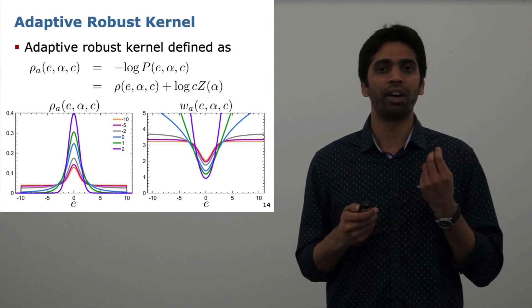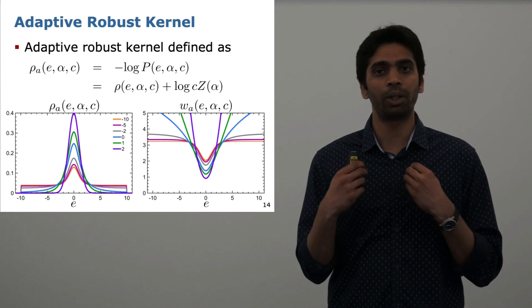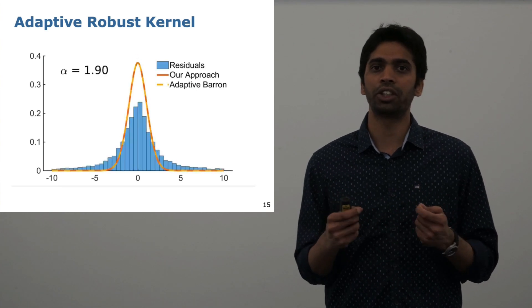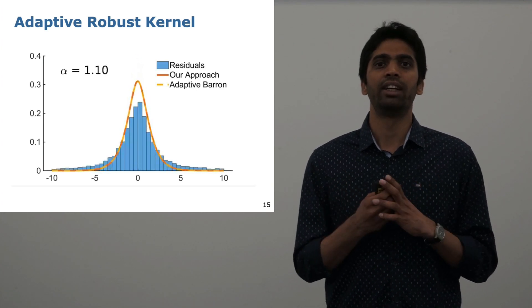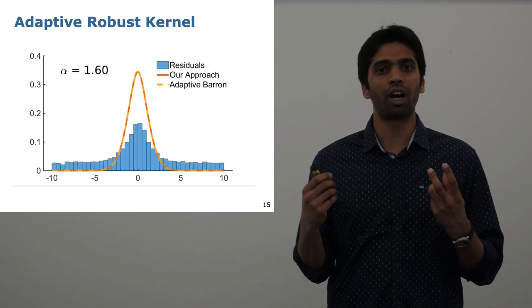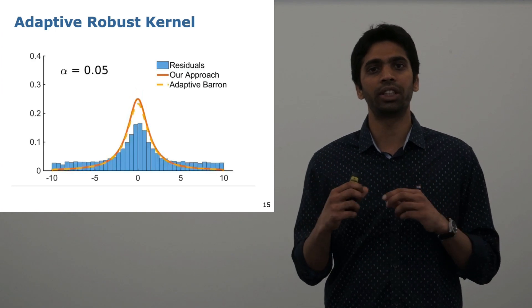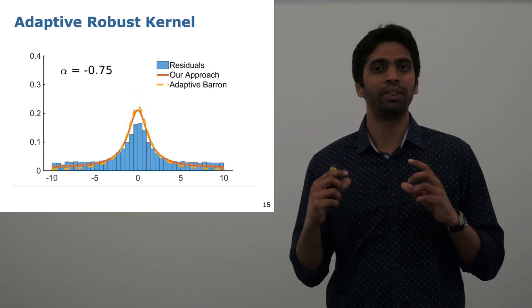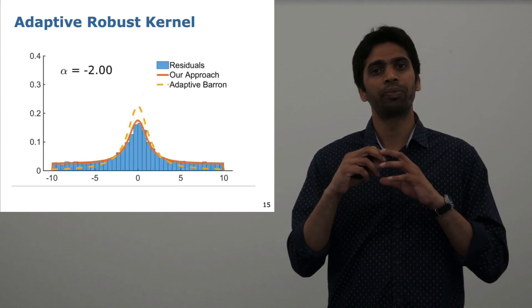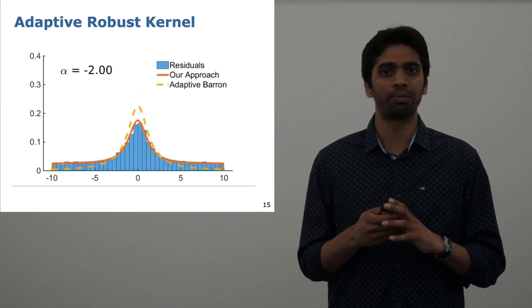With this, we come up with a truncated robust kernel which is able to adapt for a wider range of alpha values. Here I show a quick animation of how this truncated robust kernel can be used to approximate various types of outlier distributions. As we see, as the outlier distribution tails grow fatter, which means there are a larger number of large outliers, our approach is able to model this outlier distribution much more closely than the original formulation by Barron.